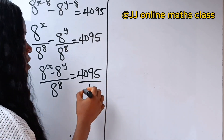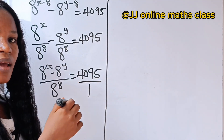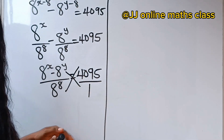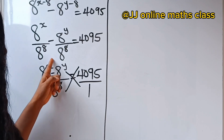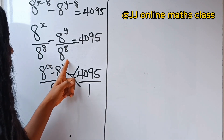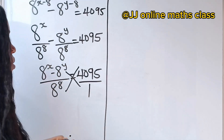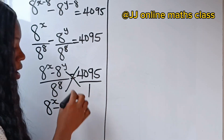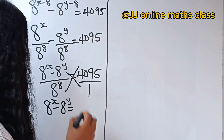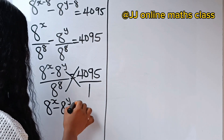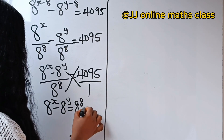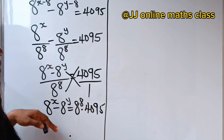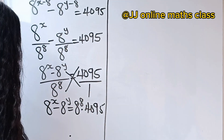Now at this point, let's cross multiply. So we are going to have 8 to the power of x minus 8 to the power of y, times 1, which gives us 8 to the power of x minus 8 to the power of y, equal to 8 to the power of x times 4,095.